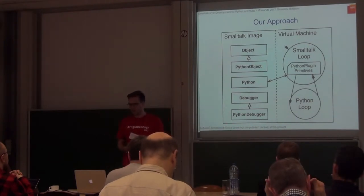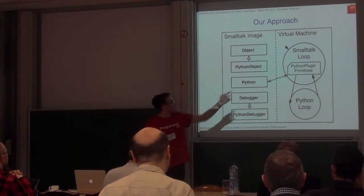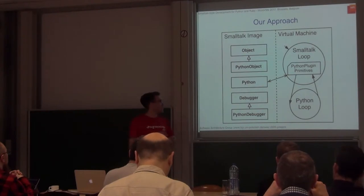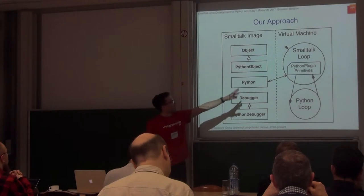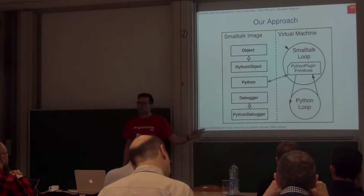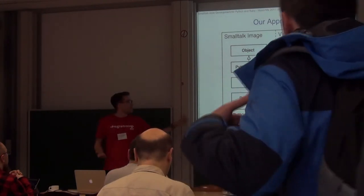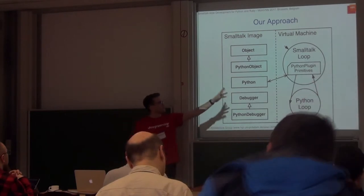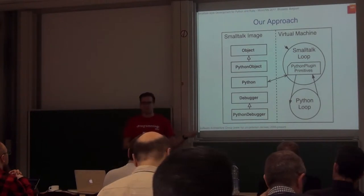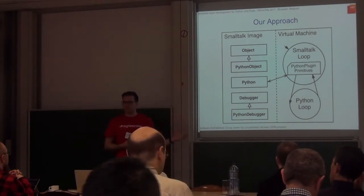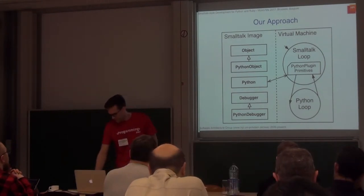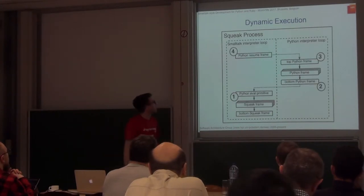How does that work? I can start a new Python process — which is actually a stacklet or a lightweight thread — and then the Smalltalk loop is interrupted and the Python loop starts. After a number of bytecodes, control is given back to the Smalltalk bytecode loop. This way we can interact with the programming environment while the Python process is running, and the Smalltalk scheduler decides when to run more Python bytecodes.